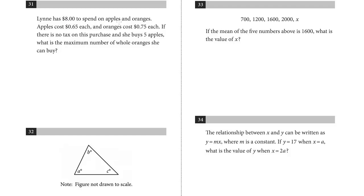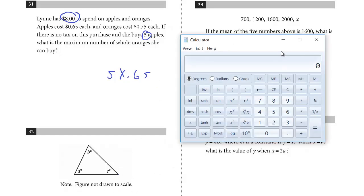Lynn has $8 to spend on apples and oranges. Apples cost $0.65 each, and oranges cost $0.75 each. There's no tax on the purchase, and she buys five apples. What's the maximum number of whole oranges she can buy? So she has $8, and we're told she buys five apples at $0.65. Even for a straightforward question like this, you can just use your calculator. So five times $0.65 — that's the amount she spends on apples. Subtract that from $8, and the remaining amount is what she can spend on oranges at $0.75 each.